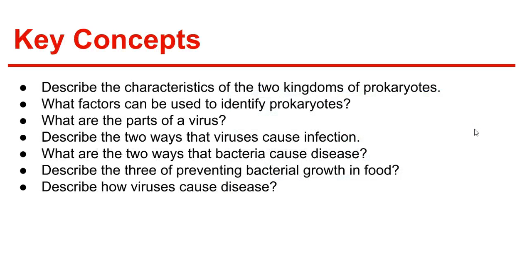Key concepts: Describe the characteristics of the two kingdoms of prokaryotes. What factors can be used to identify prokaryotes? What are the parts of a virus? Describe the two ways that viruses cause infection. What are the two ways that bacteria cause disease? Describe the three ways of preventing bacterial growth in food. Describe how viruses cause disease. That's it for Chapter 19.